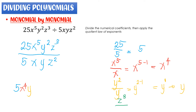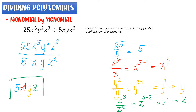Then the last variable: z cubed divided by z squared. Same case number 1, quotient law of exponent — copy the base, subtract the exponent: 3 minus 2, giving z raised to 1, or simply z. So our quotient is 5x raised to 4yz. That is how we divide a monomial by a monomial.